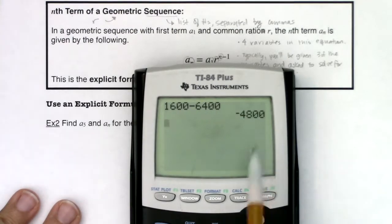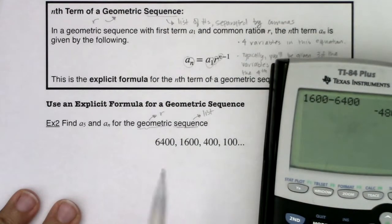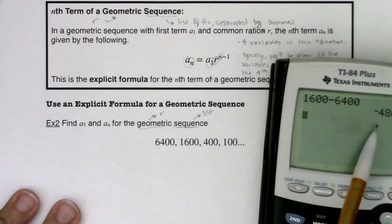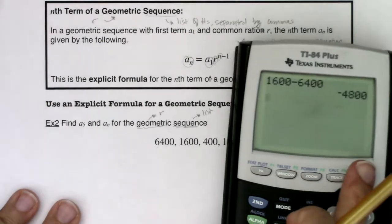We'd find out that d is potentially negative 4,800, because I lost 4,800 to go from 6,400 down to 1,600. Well, if that was the case, we would add negative 4,800. I would technically add negative 4,800 to 1,600.